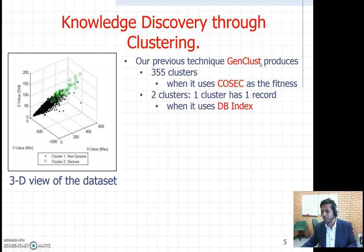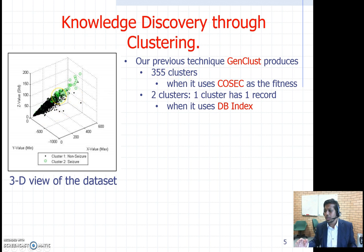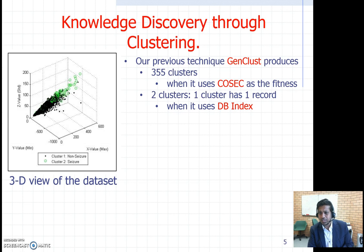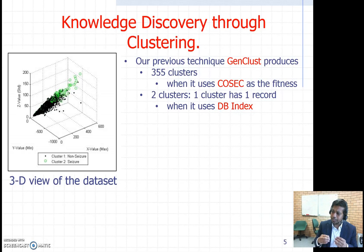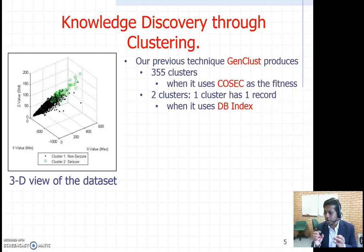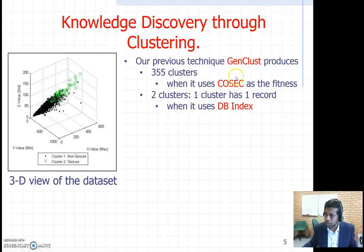We applied our previous genetic algorithm based clustering technique called GenClust, published in 2014 in Knowledge-Based Systems. However, that algorithm produced 355 clusters, which doesn't make sense since we expect two clusters — seizure and non-seizure. We explored the reason and found that the fitness function used was COSEC, which is biased towards too many small clusters, encouraging the technique to find excessive clusters.